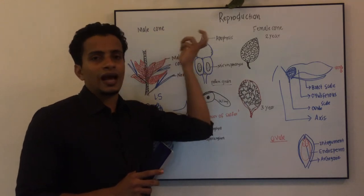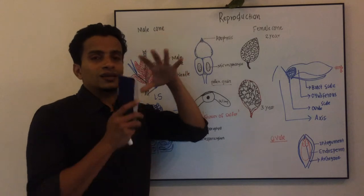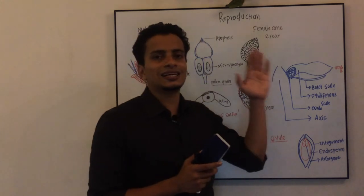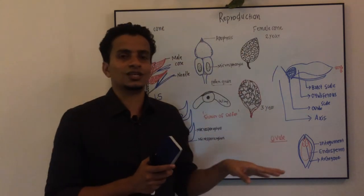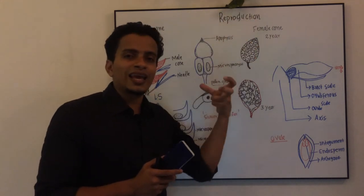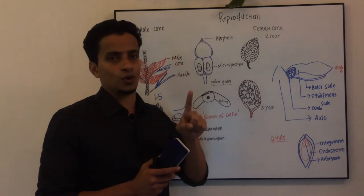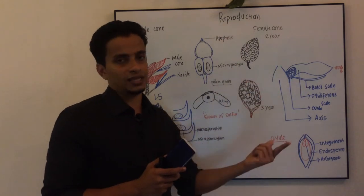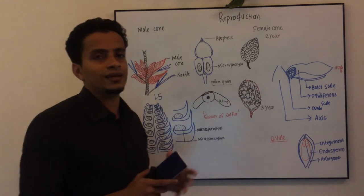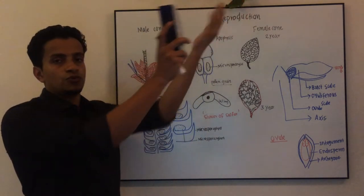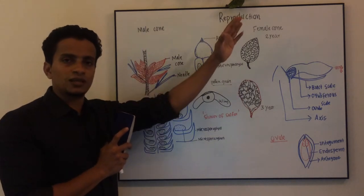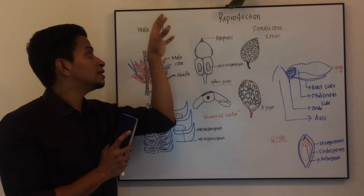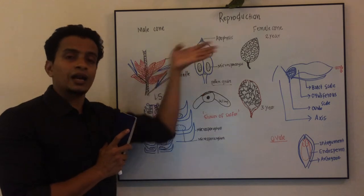The details of the male cone are similar to Cycas, but the difference between Cycas and Pinus in the female reproductive structure is that in Pinus, you can see aggregated megasporophylls, or a female cone. So female cone and male cone can both be seen in Pinus. It produces two types of spores — microspores and megaspores — produced inside microsporangia and megasporangia respectively.